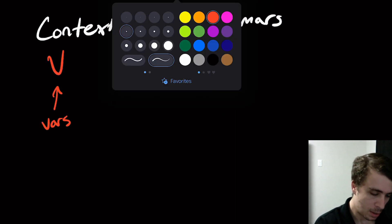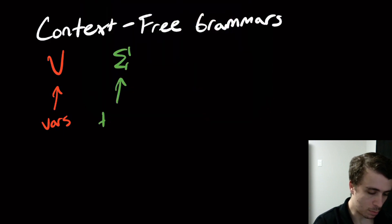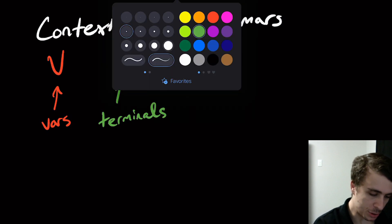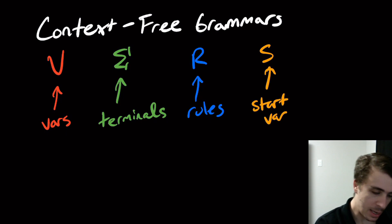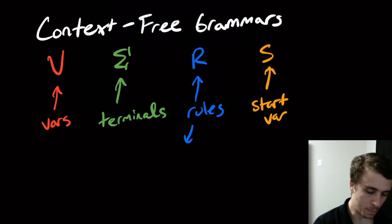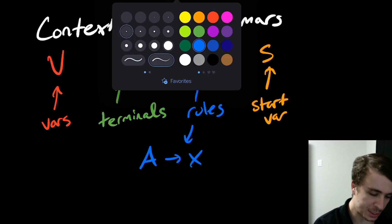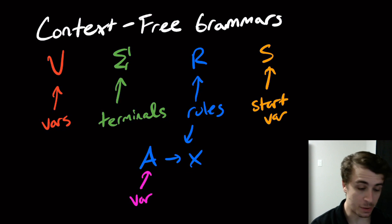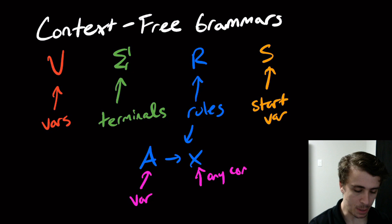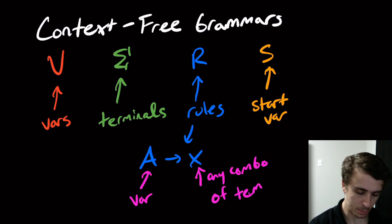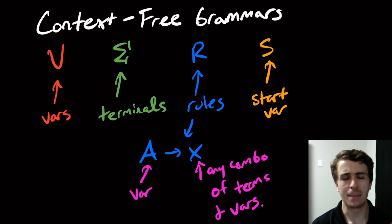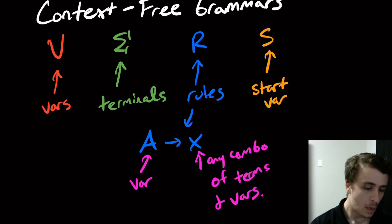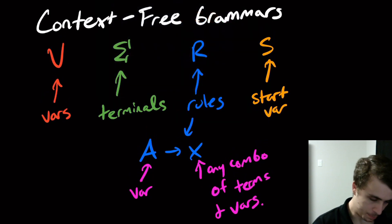In a context-free grammar we have a set of variables, we have a terminal set — or we just call them terminals — we also had a set of rules, and we have a start variable. Every rule is going to be of the form: some variable A goes to X, where A is a single variable and X is any combination of terminals and variables — including the empty string or a single variable.